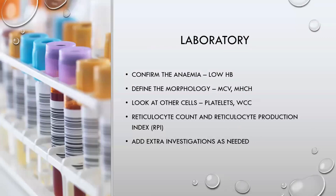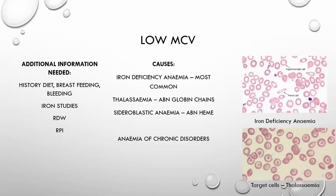In the laboratory, start by confirming anemia with a low hemoglobin. Then define red cell morphology: MCV and mean hemoglobin concentration. Check platelets and white cell count — pancytopenia points toward a different etiology. Very importantly, check the reticulocyte count and reticulocyte production index (RPI) to assess bone marrow production. Additional investigations follow based on these findings.